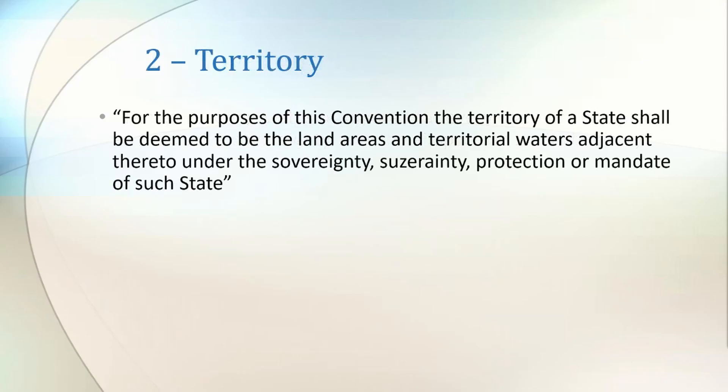Article 2 simply exists in order to clarify Article 1. It clarifies the definition of the land that is covered when ICAO refers to a state.